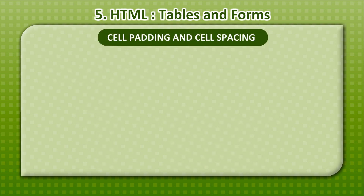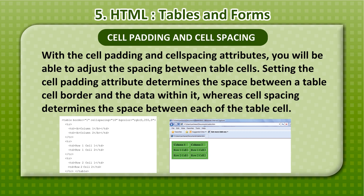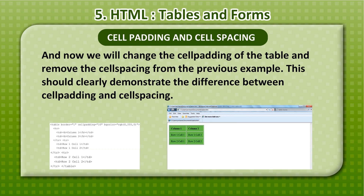Cell Padding and Cell Spacing: With the cellpadding and cellspacing attributes, you will be able to adjust the spacing between the table cells. Setting the cellpadding attribute determines the space between a table cell border and the data within it. Whereas cellspacing determines the space between each of the table cells. We will change the cell padding of the table and remove the cell spacing from the previous example, to clearly demonstrate the difference between cell padding and cell spacing.